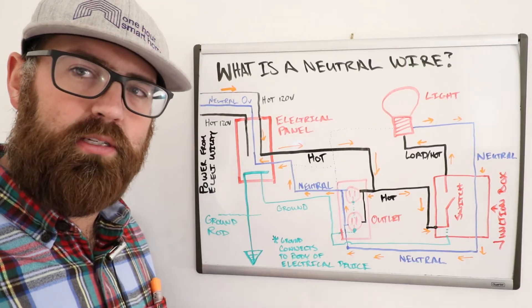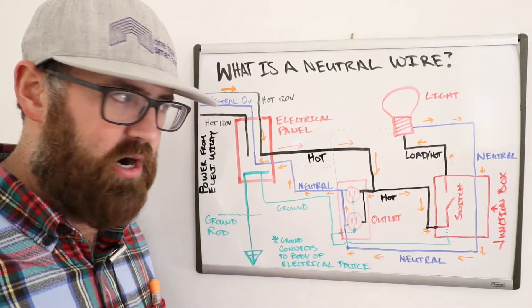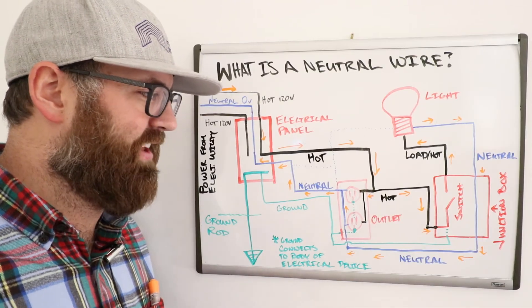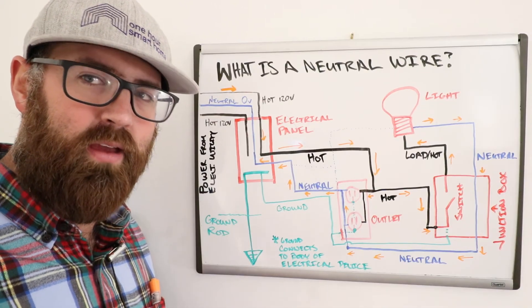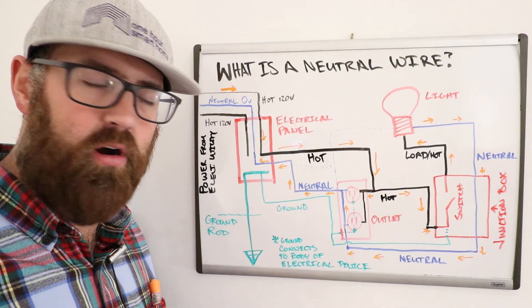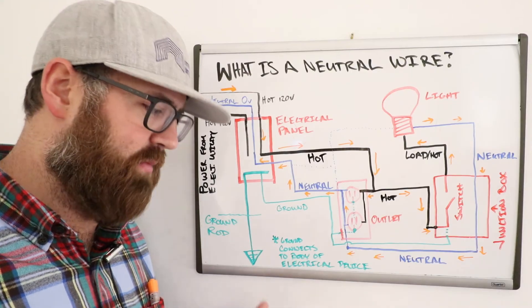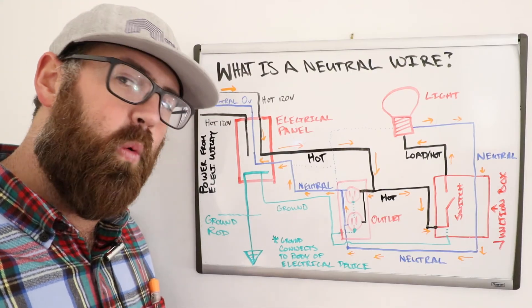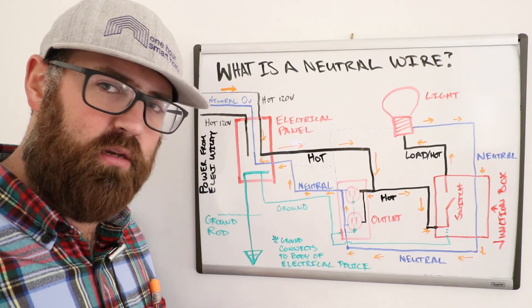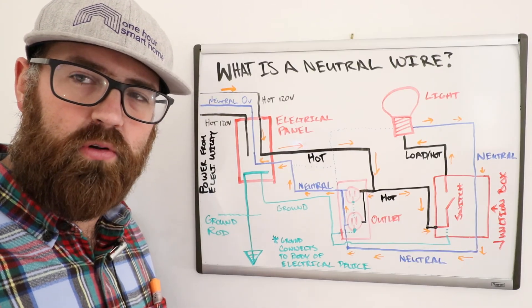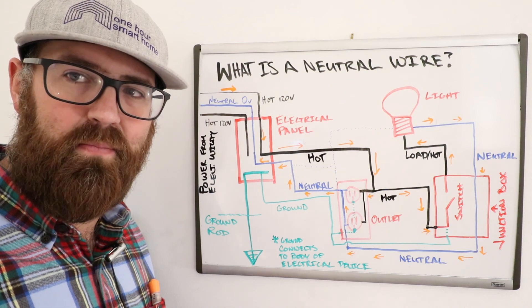We hope this explained to you what is a neutral wire, what a neutral wire does. And just to reiterate, a neutral wire is the return path for current. The typical wiring for an electrical home circuit is going to be black is hot, white is a neutral wire, and green or bare copper is going to be your ground wire. We hope you enjoyed this. Please like and subscribe. Thank you.